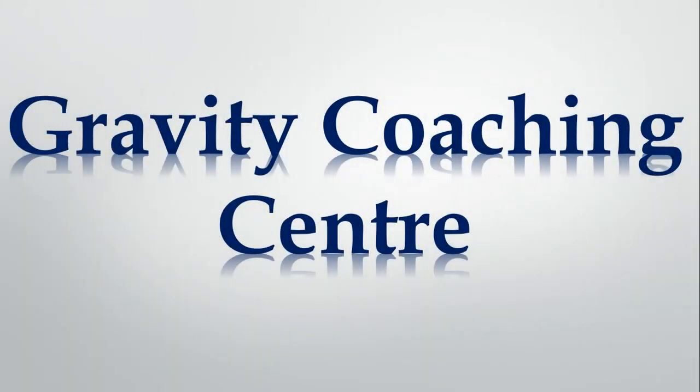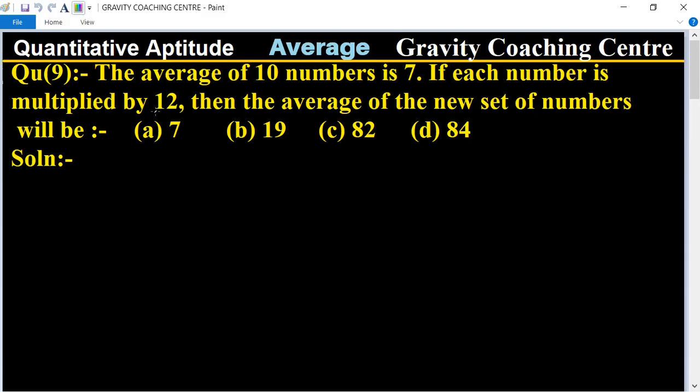Welcome to our channel, Gravity Coaching Center. Quantitative Aptitude, chapter Average, question number 9. The average of 10 numbers is 7. If each number is multiplied by 12, then the average of the new set of numbers will be which one?